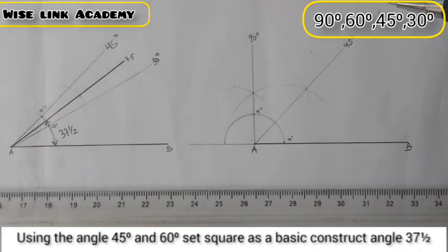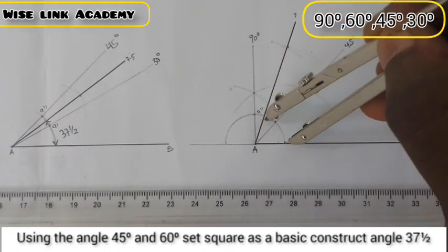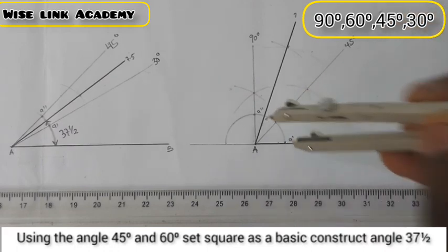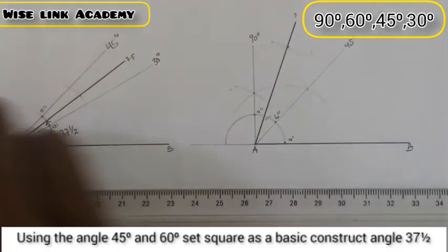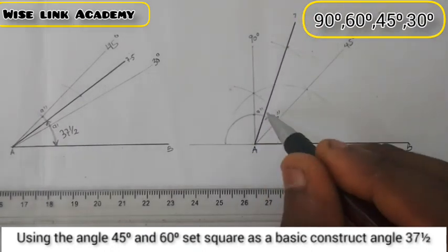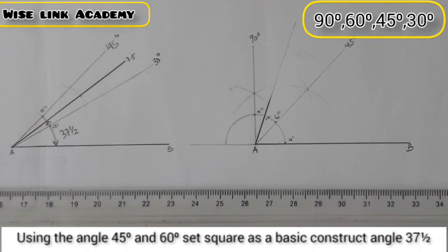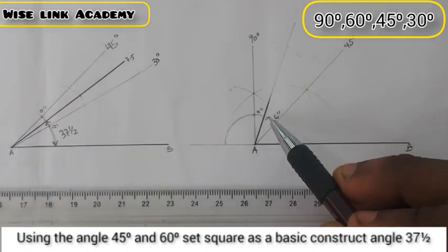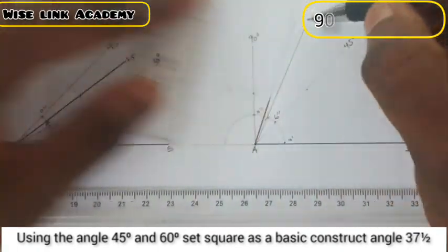Now we want to get 37 and a half. I need to get 60. We said in between 60 and 45, that is where 37 and half falls. I need to erase, delete this line here. This point here is my point 60 degree. I will draw it this way. Knowing that we are not using this line, all we just need is angle 60. Connect this point here to this point with a faint line. Here is 60 degree.